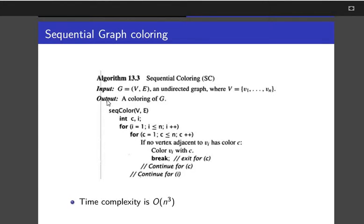And in the output, we are expecting a colored graph G. We will go into the function. Now this is the sequence color function. In that we pass the vertices, vertices set and edges set. And then we initialized int as c and i.